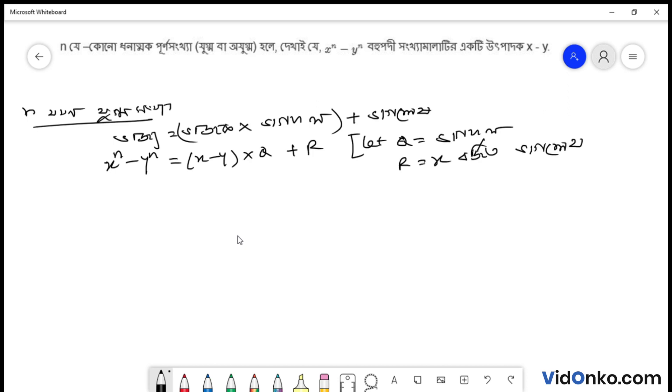We substitute the values. From the rule, we get y to the power n minus y to the power n equals to y minus y into q plus r, so this is 0 plus r, so r equals to 0.